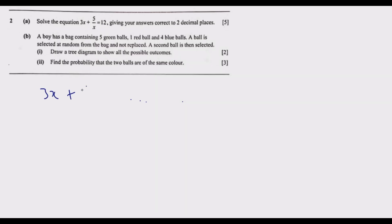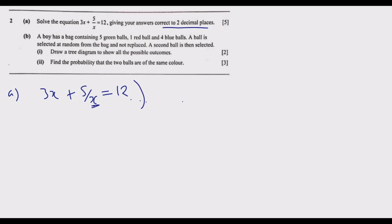The equation is 3x plus 5 over x equals 12, giving your answers correct to two decimal places. The number of decimal places has been specified, so we are solving for x. The first thing we need to do in part (a) is get rid of x in the denominator, and we do that by multiplying everything by x.